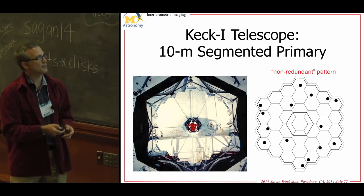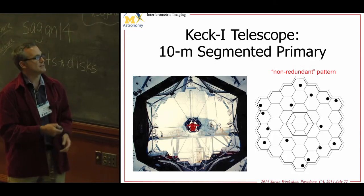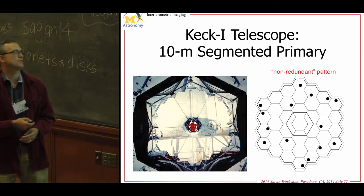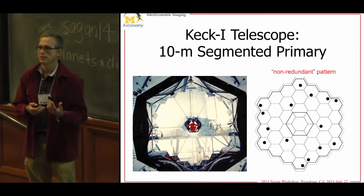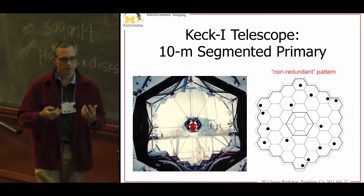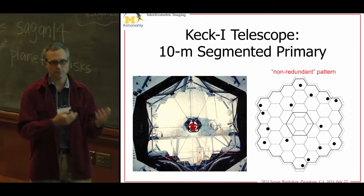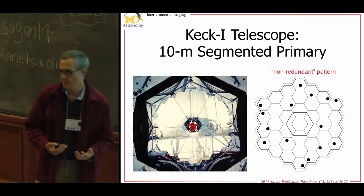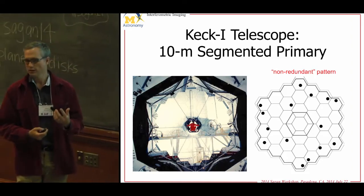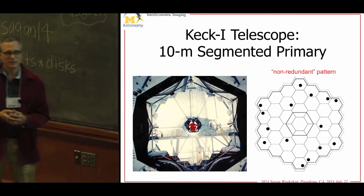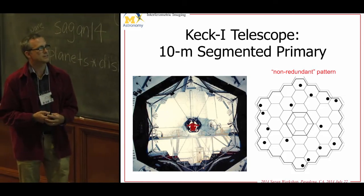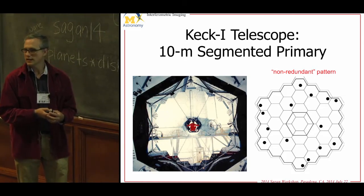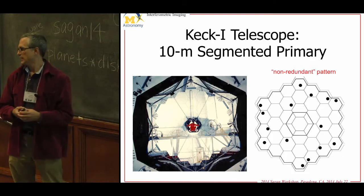You get a lot of information combinatorially. With 15 holes, 15-choose-2 gives around 100 baselines. The downside is this kind of array blocks 90% of the Keck aperture — it really is a drastic reduction in the amount of light.